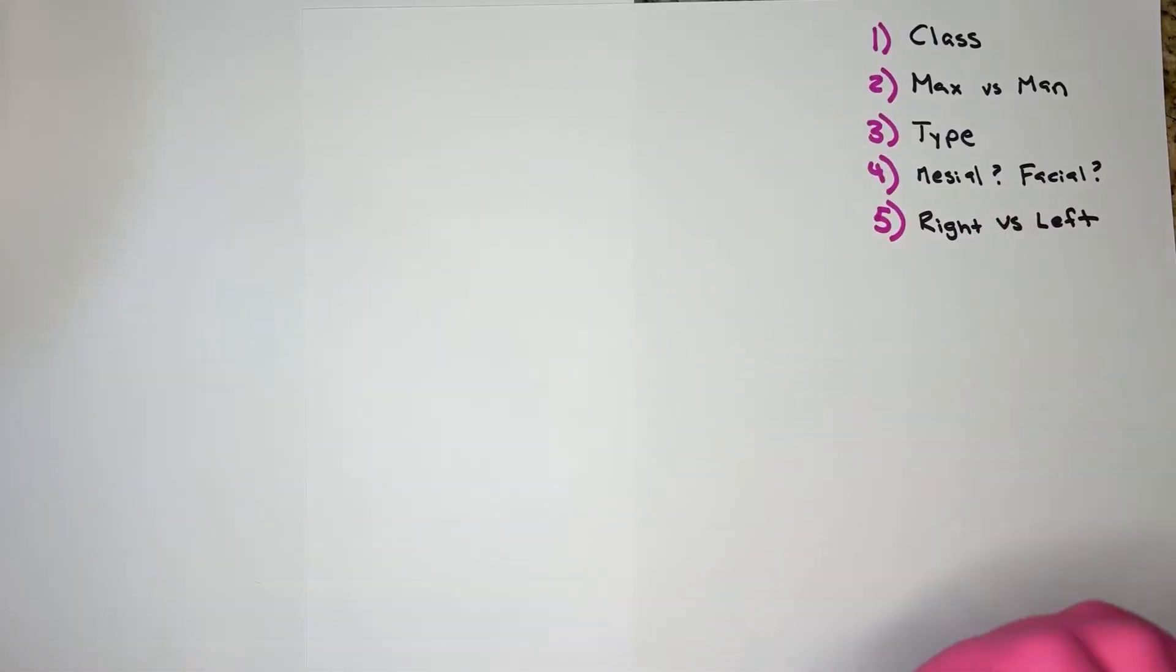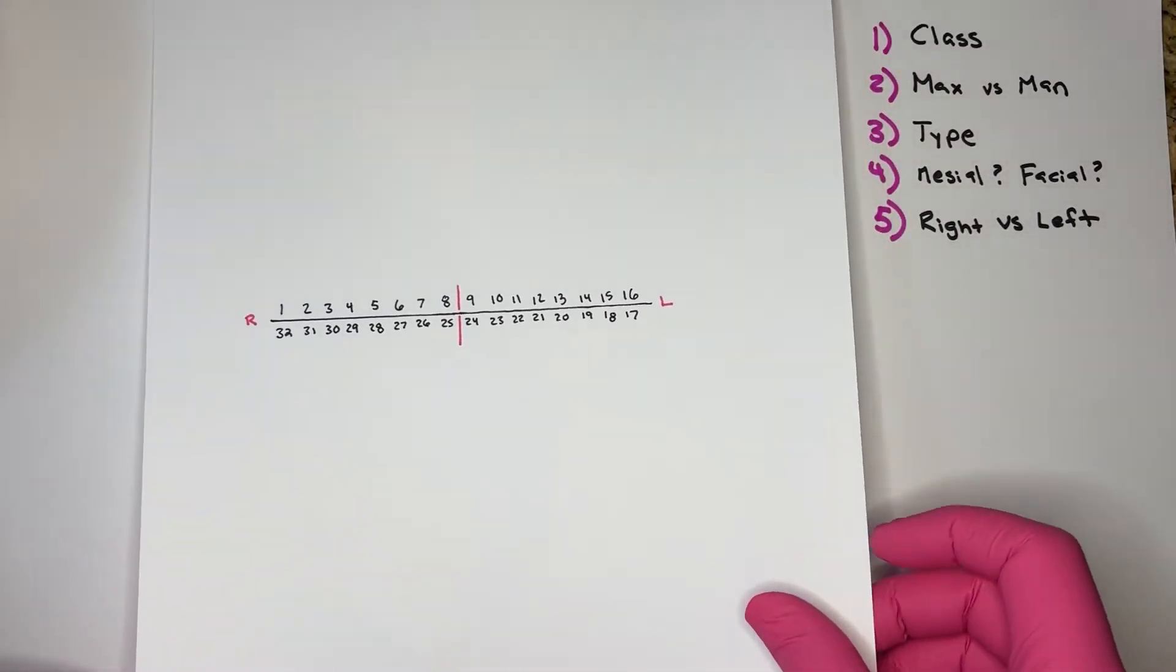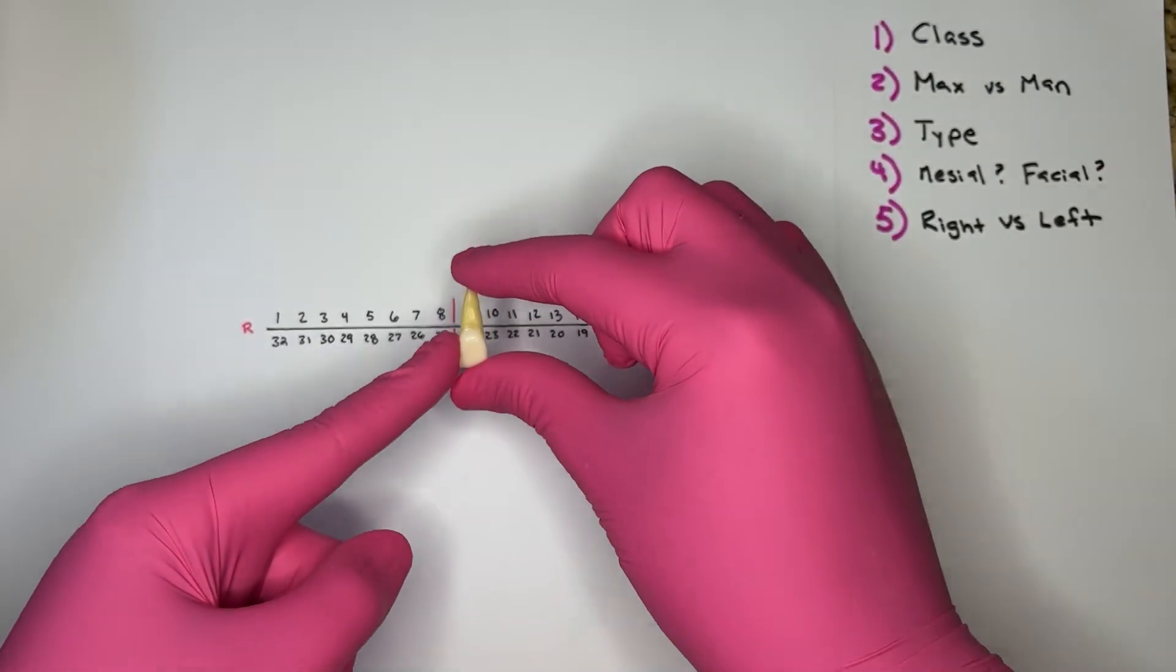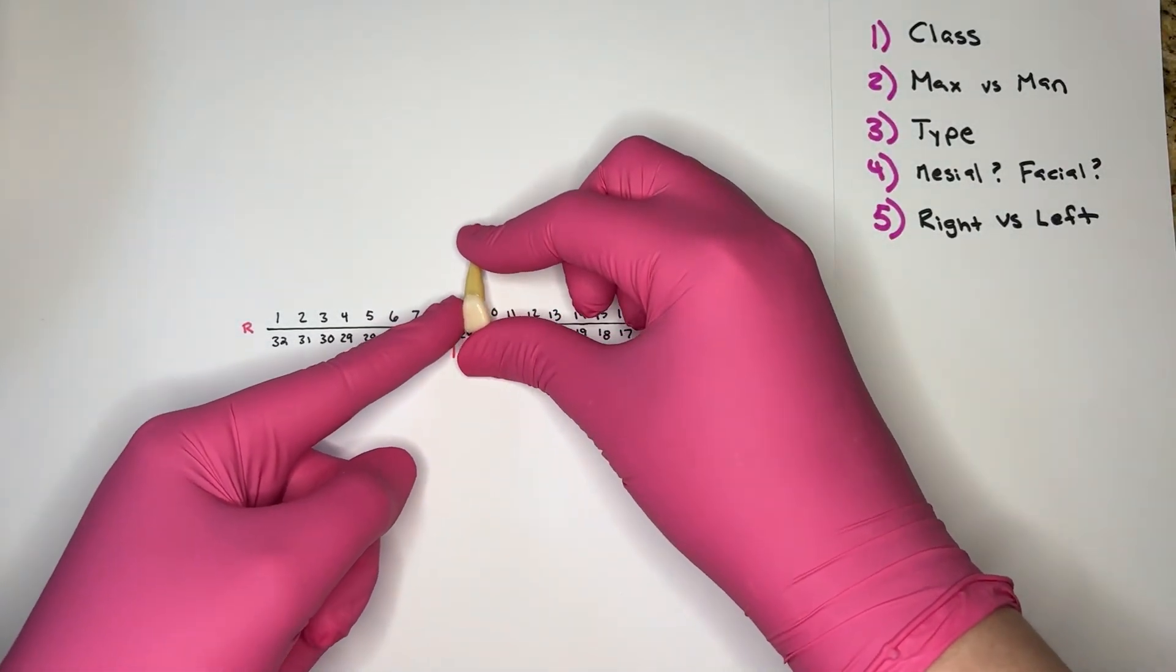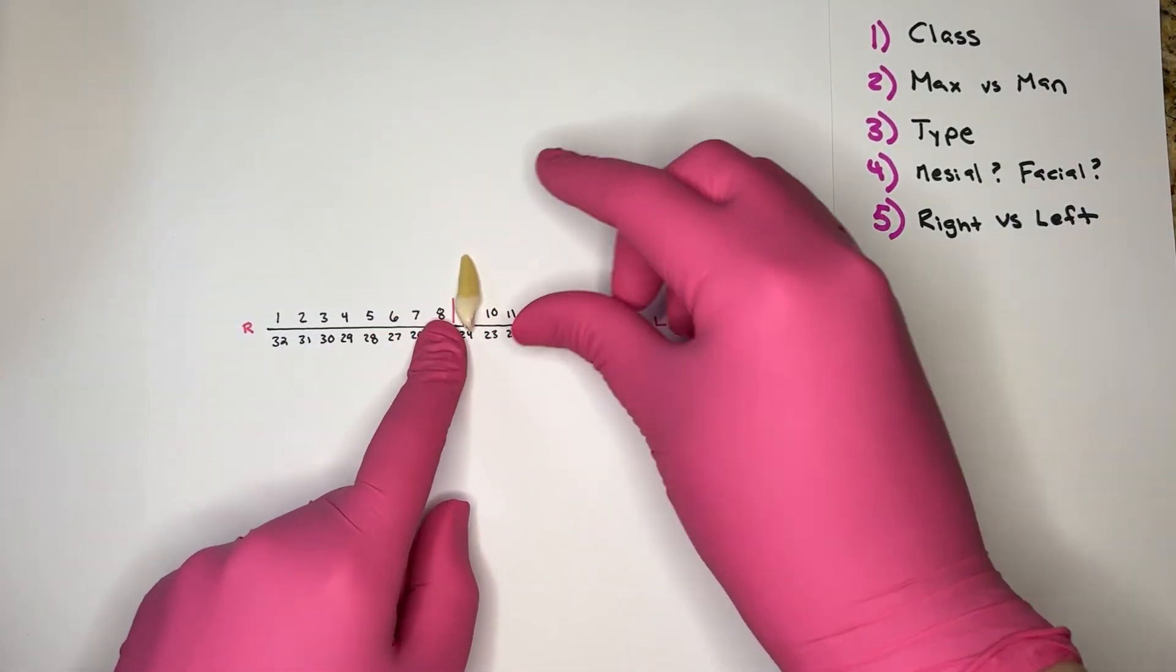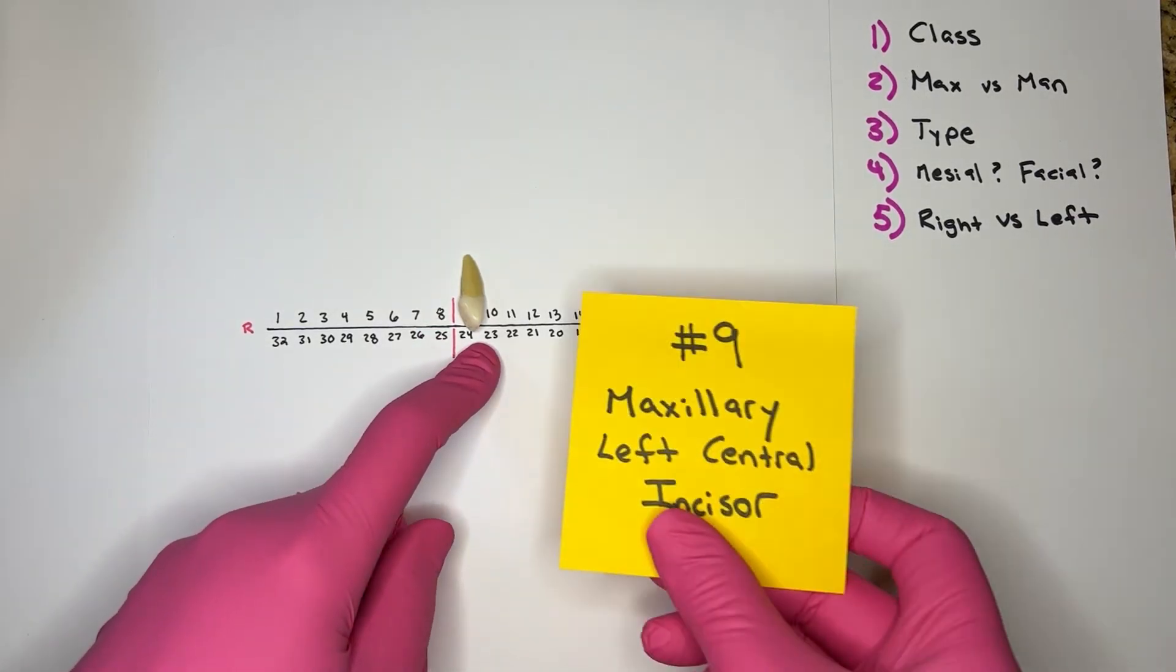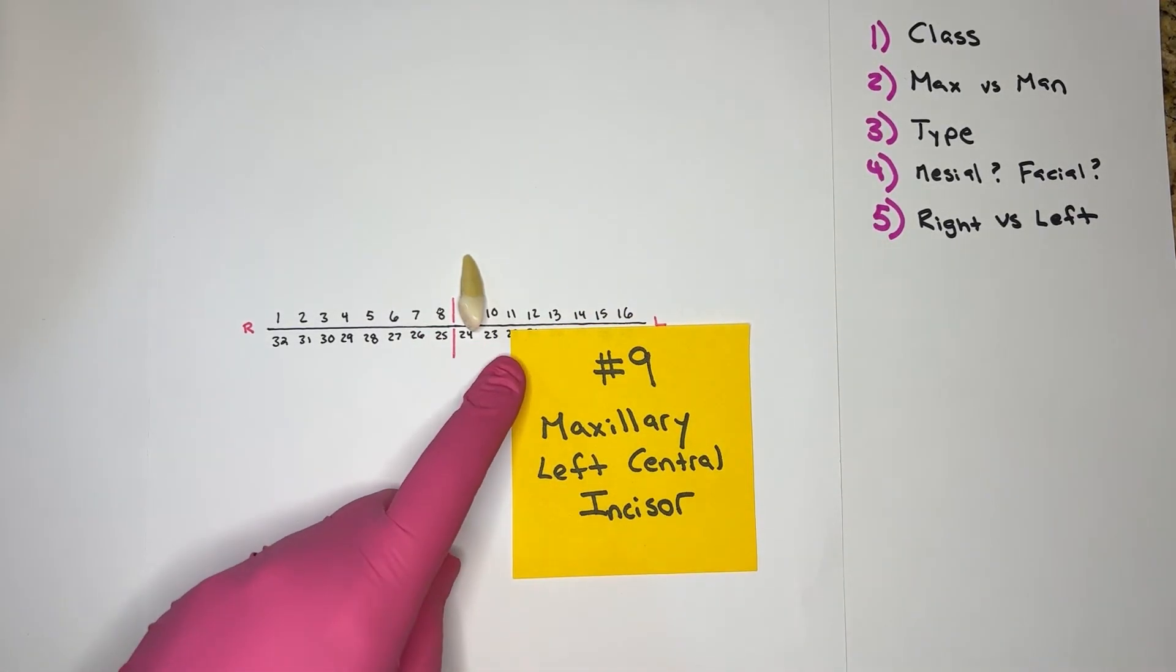Step number five, right versus left. If I take an imaginary mouth, hold the facial towards me, mark the mesial, bring that mesial to the midline of the imaginary mouth, I know that this is the patient's left. So this is number nine, the maxillary left central incisor.